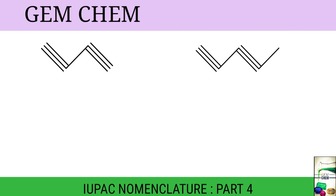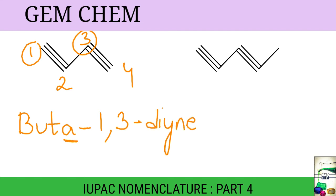Now see this one. We number it as 1, 2, 3, 4. If we number from the opposite side, the numbering will be the same. We will write it as but-a, then the position number is 1 and 3, so 1,3-diyne. See, here it is 'a' and here it is 'di', so no two vowels are present together. Most specifically, since there is only the option of presence by leaving a gap between them to have a triple bond, we can write it as butadiyne. This is one option.